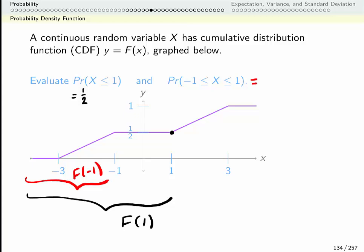So the probability that my variable is between 1 and negative 1 is the probability that it's less than or equal to 1 minus the probability that it's less than or equal to negative 1 because that's the range that's sort of undesirable. So F of 1 we already saw was a half. That's right here.